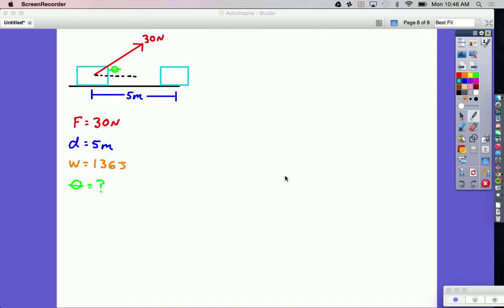This is the picture that's on my website, but I tried to draw it as best I could here. In this case, a woman is pulling a crate, and she's pulling with a rope, that's this red arrow here, with a force of 30 newtons. The crate's going to go a distance of 5 meters to the right, and she does a total of 136 joules of work.